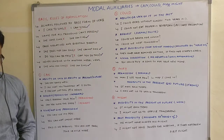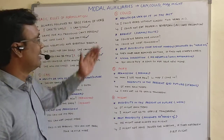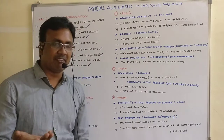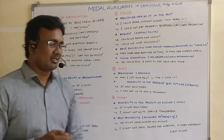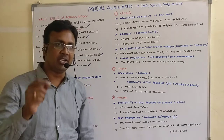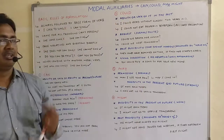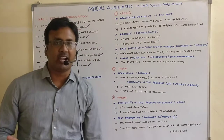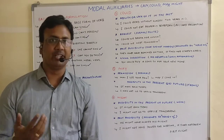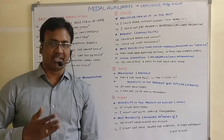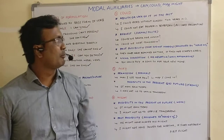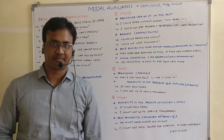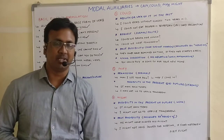Now let's move to 'could,' which has much wider uses compared to 'can.' Could is also used to express ability or lack of it — but in the past. For example, 'I could read without glasses 2 years ago' — this is a past ability I no longer have. Another example: 'I could not eat properly yesterday as I had fallen sick.' Yesterday I did not have the ability to eat properly, but today I can. That's why we use 'could' for past ability.